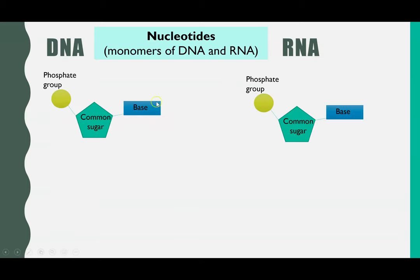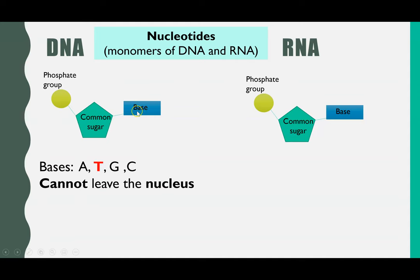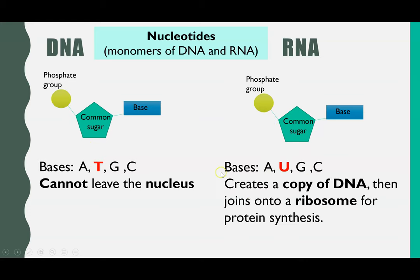DNA and RNA are both nucleotides and almost identical. The key difference is the bases they have. DNA has A, T, G, and C, and DNA can never leave the nucleus. RNA has A, U instead of T, G, and C, and RNA can leave the nucleus. Your DNA is your hard copy genetic code, and if it gets out of the nucleus it's at risk of being broken down by enzymes. And if you lose that original copy, then that cell will die.